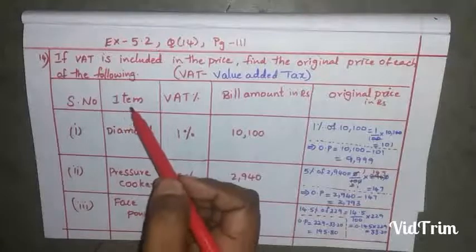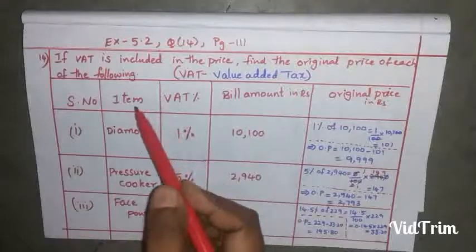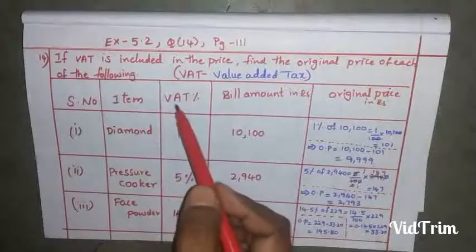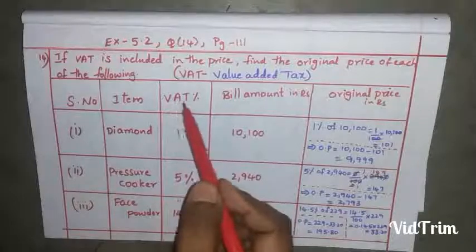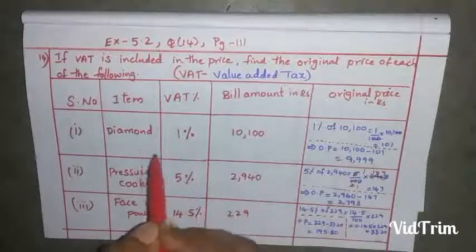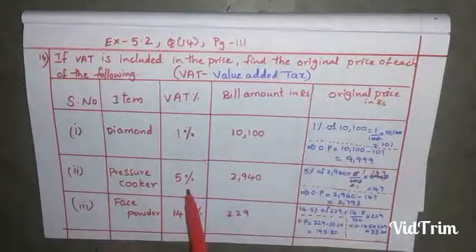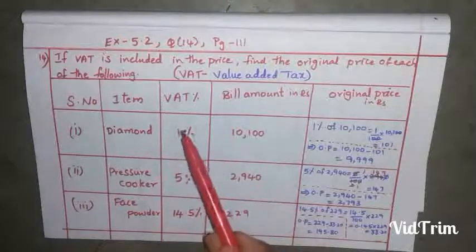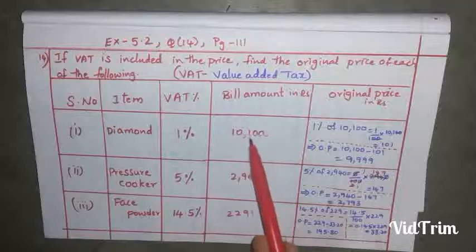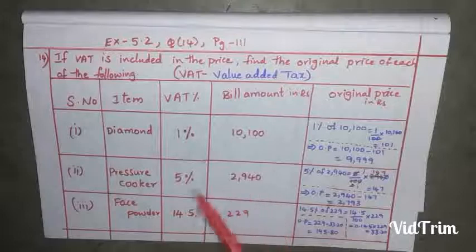Three items are given: diamond, pressure cooker, and face powder. On each item, the value added tax percentage is given — diamond has 1%, pressure cooker has 5%, and face powder has 14.5% VAT. After adding VAT, the bill amounts are: diamond 10,100 rupees, pressure cooker 2,940 rupees, and face powder 229 rupees.